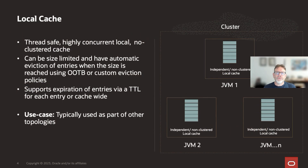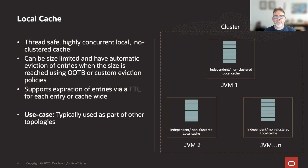Local caches are thread-safe, highly concurrent single JVM caches. They are typically size-limited by a number of entries or by the memory usage of the cache, and support various customized out-of-the-box eviction policies, including the ability to create custom policies. Local caches also support expiration of given entries given a time to live, which can apply to individual or all entries in a cache. They are typically used as part of other cache topologies, such as near caches, as well as the core of the underlying distributed or partitioned cache.